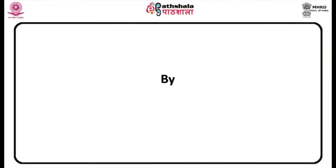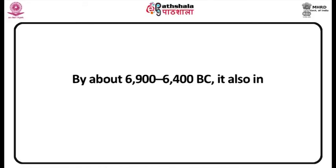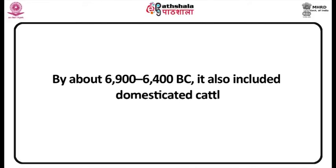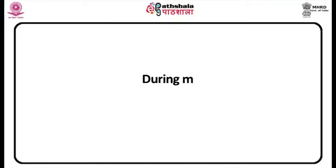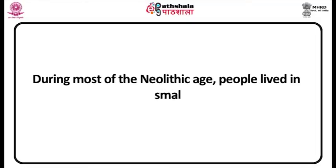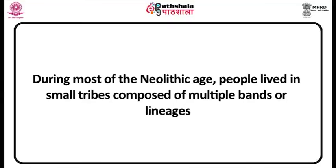Farming became the new mantra and people settled along with their animals. This early Neolithic farming was limited to a narrow range of plants, both wild and domesticated, which included einkorn wheat, millet and spelt, and the keeping of dogs, sheep and goats. By about 6,900 to 6,400 BC, it also included domesticated cattle and pigs and the use of pottery. During most of the Neolithic age, people lived in small tribes composed of multiple bands or lineages.